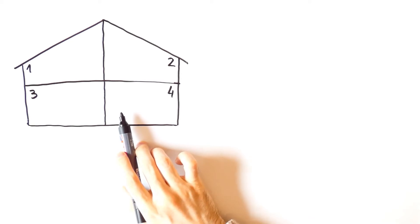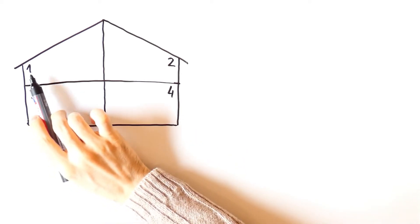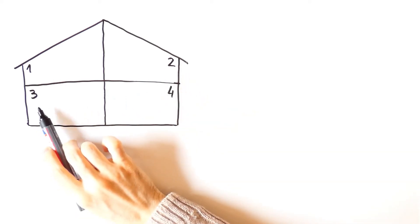Suppose that we have a house. That house consists of four rooms. We'll call them room 1, room 2, room 3 and room 4.